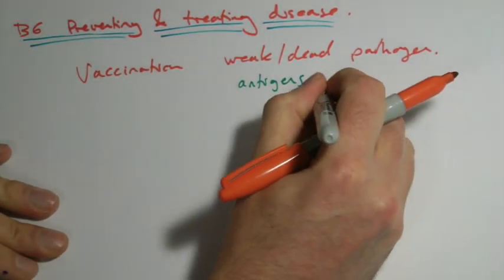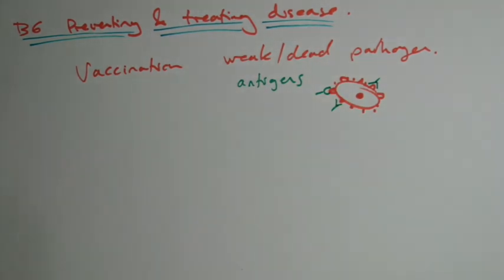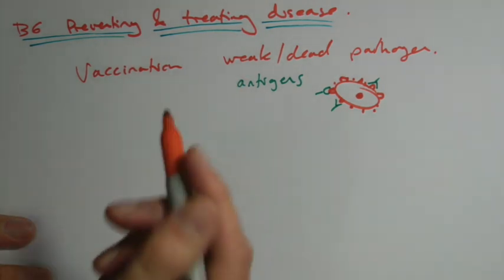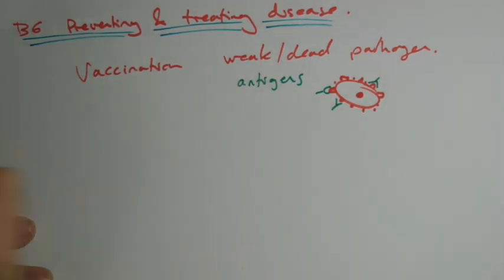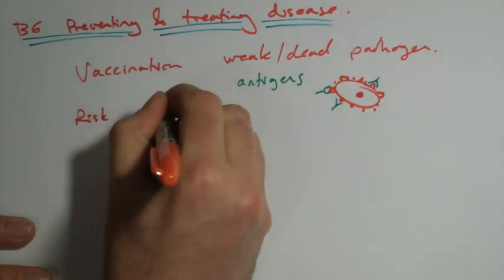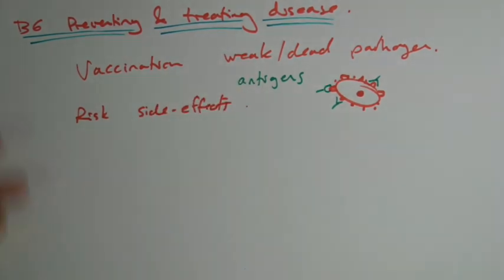Antibodies will join on to these antigens and are involved in then destroying any of the pathogens. So antigens are introduced in the cases of vaccinations. There is always a risk of side effects with any, well not just a vaccination, but with any medical. We don't think of the risk of putting a plaster on for example, but there's a risk, you can have an allergic reaction to them.